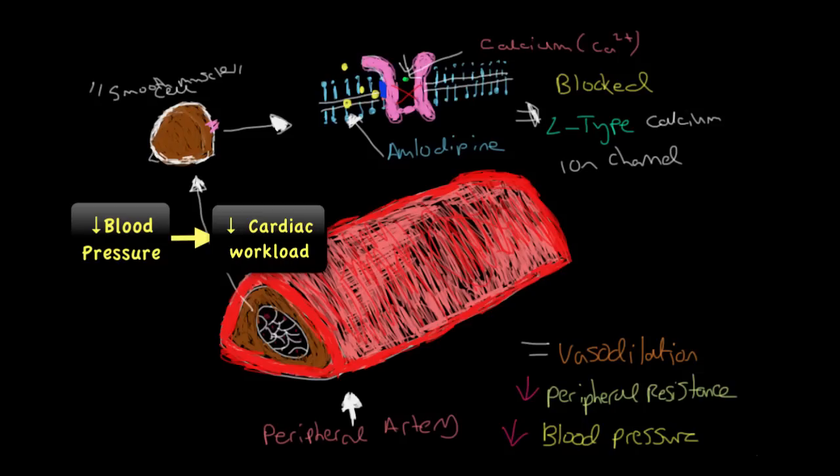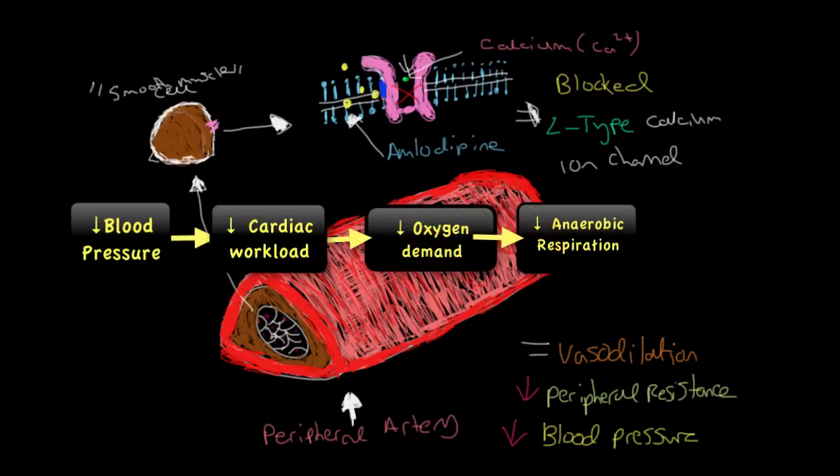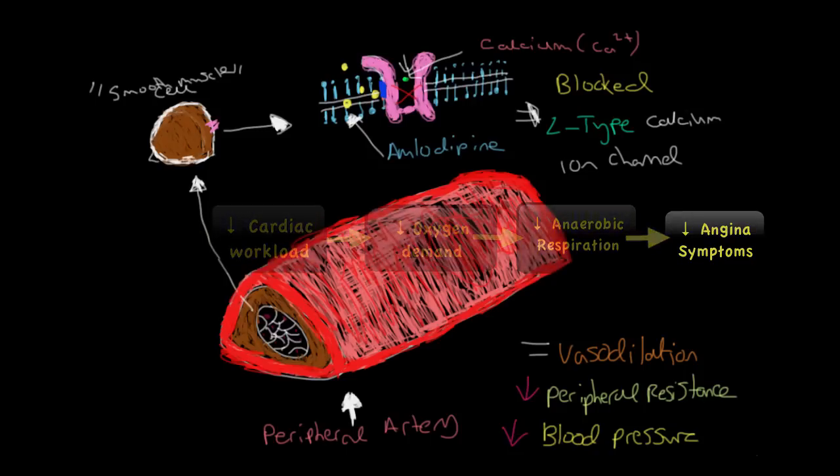As the heart muscle doesn't have to work so hard, the demand for oxygen is greatly reduced and therefore the ischemic pain that results from anaerobic respiration can't occur. Therefore, this reduces the symptoms of angina. However, as these drugs have no effect on the conduction system of the heart, a decrease in blood pressure tends to stimulate the sympathetic nervous system through the baroreceptor reflex. This tends to lead to reflex tachycardia which then brings up all the angina symptoms that we were trying to stop again.